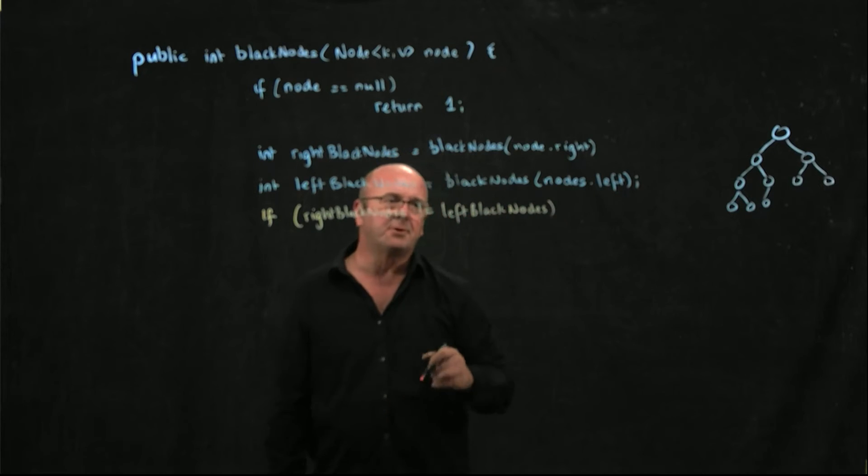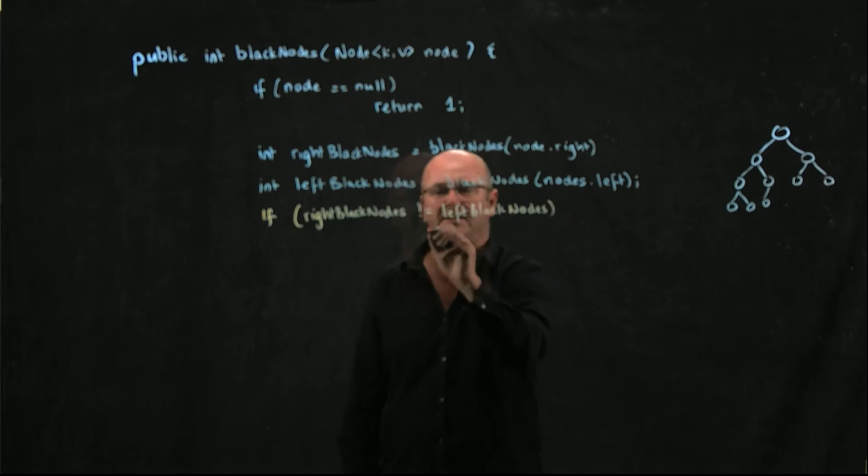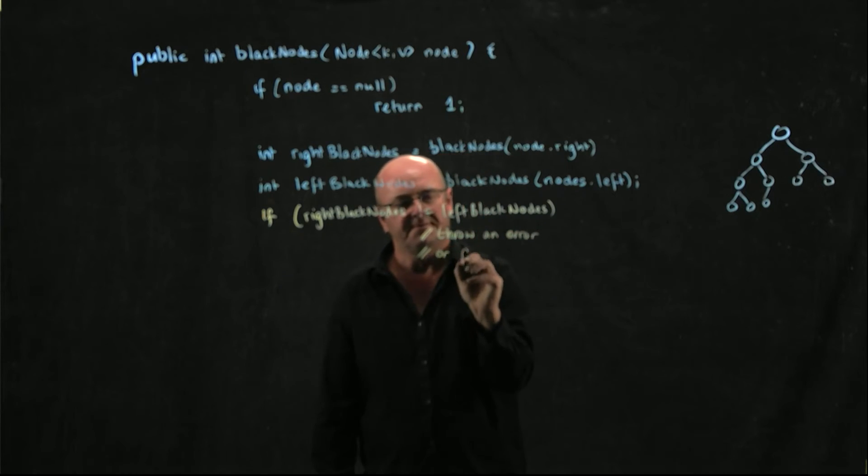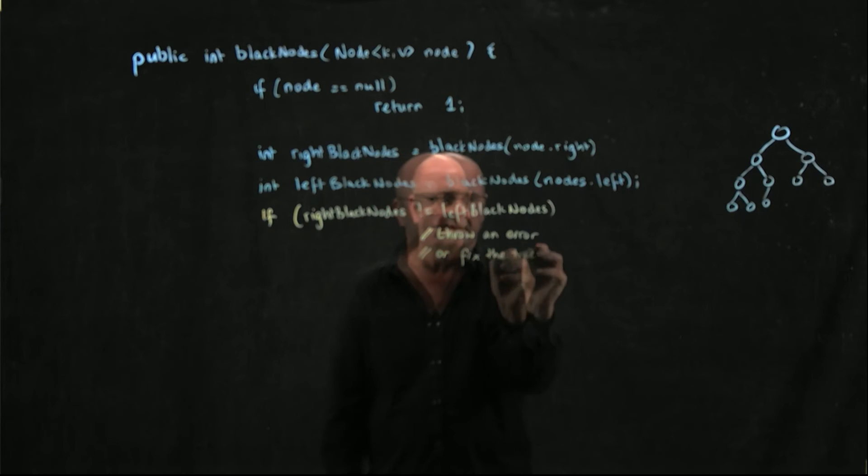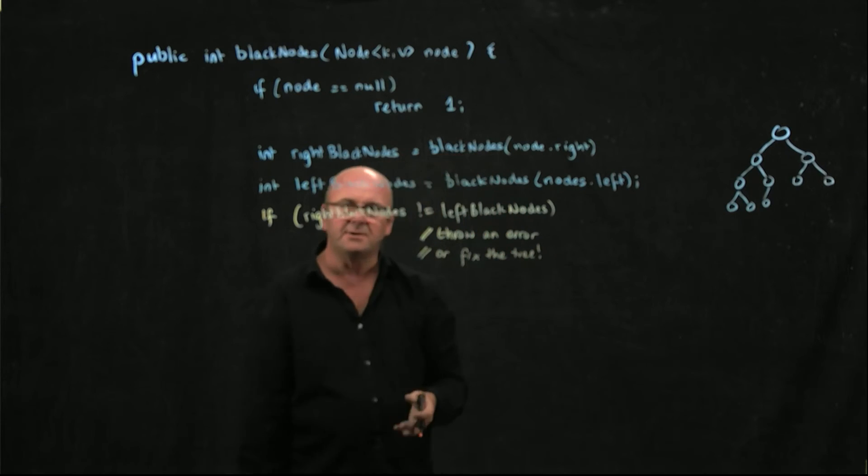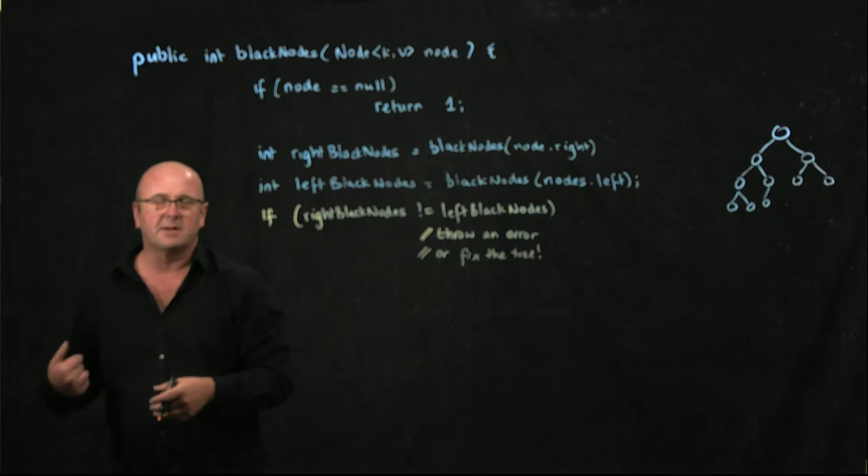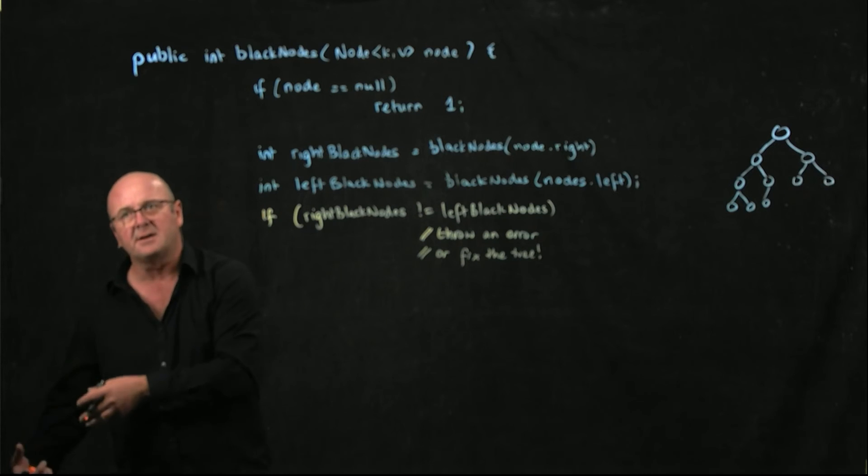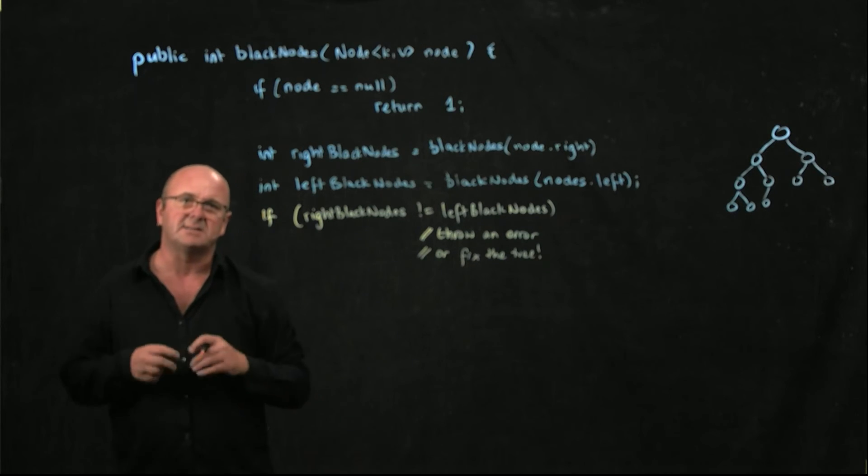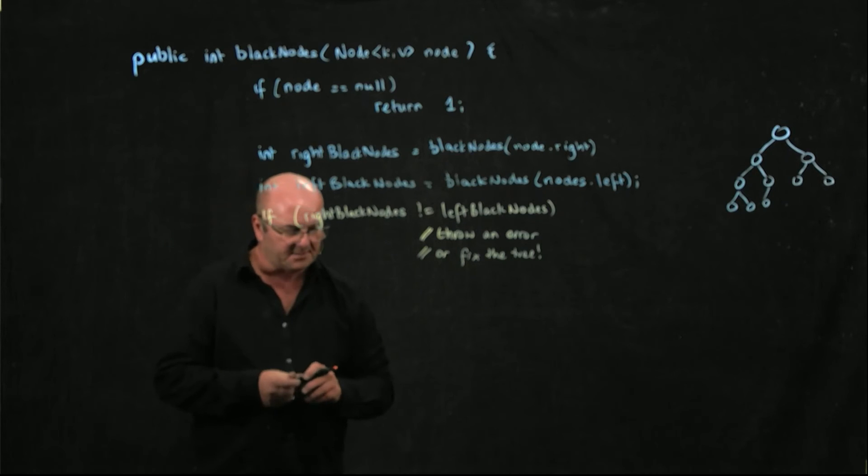we should probably throw an error here or fix the tree. We need to know if the number of black nodes on our left side and the number of black nodes on our right side is not the same. We need to do something.